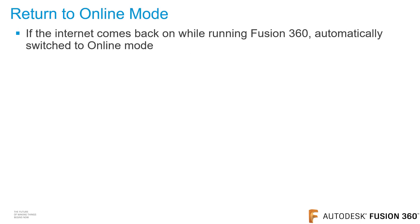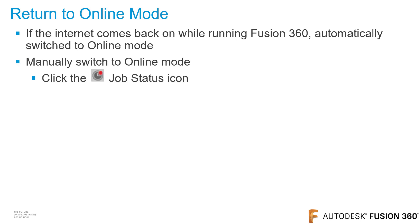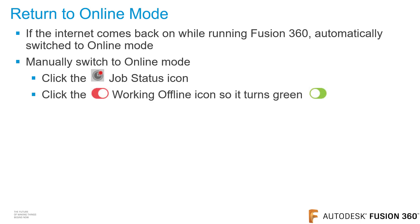If Fusion 360 went to offline mode because the internet went down, when the internet comes back on, Fusion 360 will automatically go back to online mode. You can manually switch to online mode by clicking on the job status icon on the top right corner of Fusion 360's screen, then click on the slider to change to online mode.